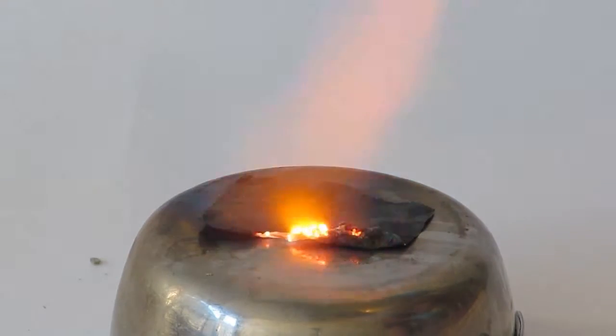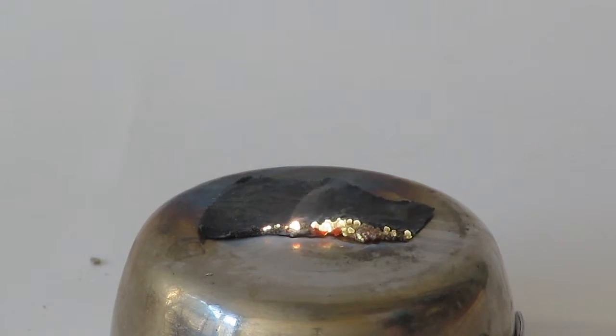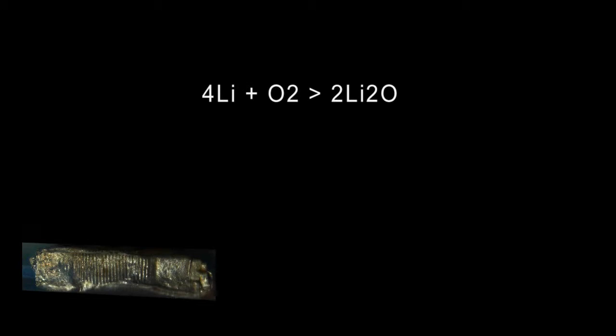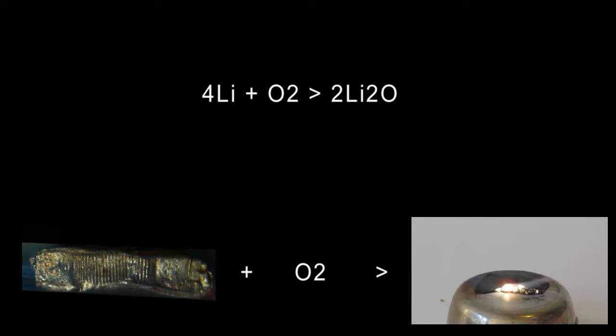Now we're going to take lithium and make lithium oxide. This reaction will use four atoms of lithium plus the diatomic molecule of oxygen to get two molecules of lithium oxide and a lot of heat.